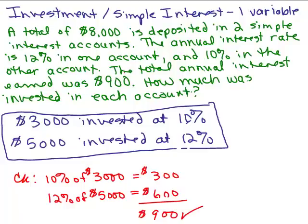And so, yes, if you look back at the problem, that's true. Now, remember, 10% of $3,000, you could just write 0.10 times $3,000, right? I'm not showing that step but that's 0.12 times $5,000 as well. So, this is indeed the correct answer. $3,000 invested at 10% and $5,000 invested at 12%.